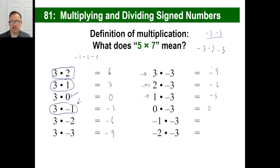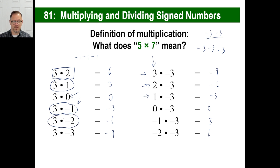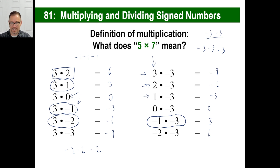Now here's where it gets weird. Each time on this column we're going down one: three, two, one, zero, negative one, negative two. What's happening to the answer each time? The answer is going up by three — it's going up three each time. So logically, the next answer has to be three, and then six. But how do you explain negative one times negative three to a little kid? How many negative threes do you have? You have negative one of them. How do you have negative one of anything? It's kind of strange — it doesn't make sense intuitively.